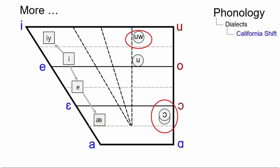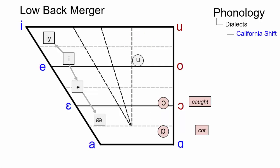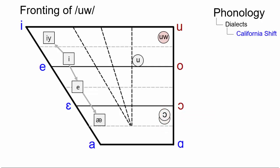Two further sound shifts are key elements of the California shift. The low back merger, where the distinction between the vowels in cot and caught has been lost, and the fronting of U.